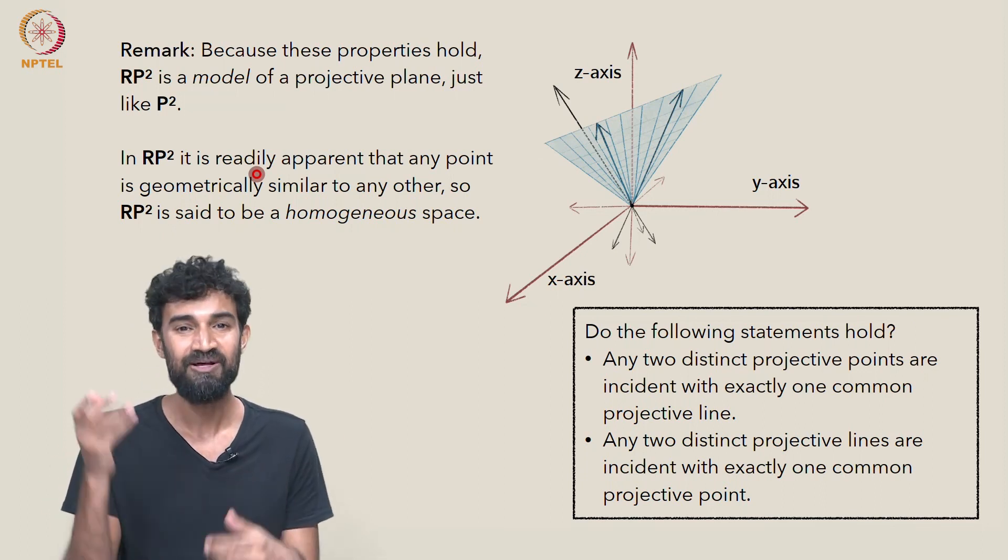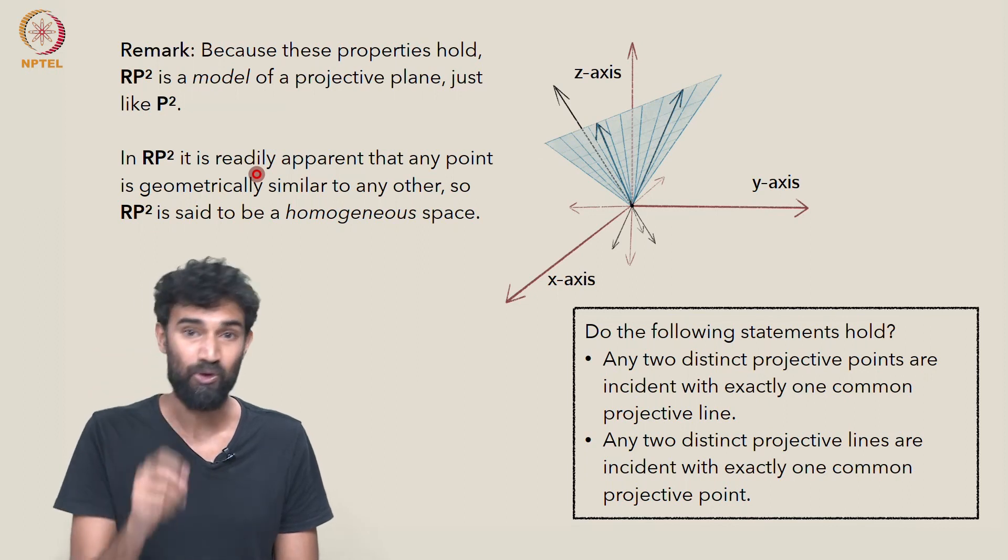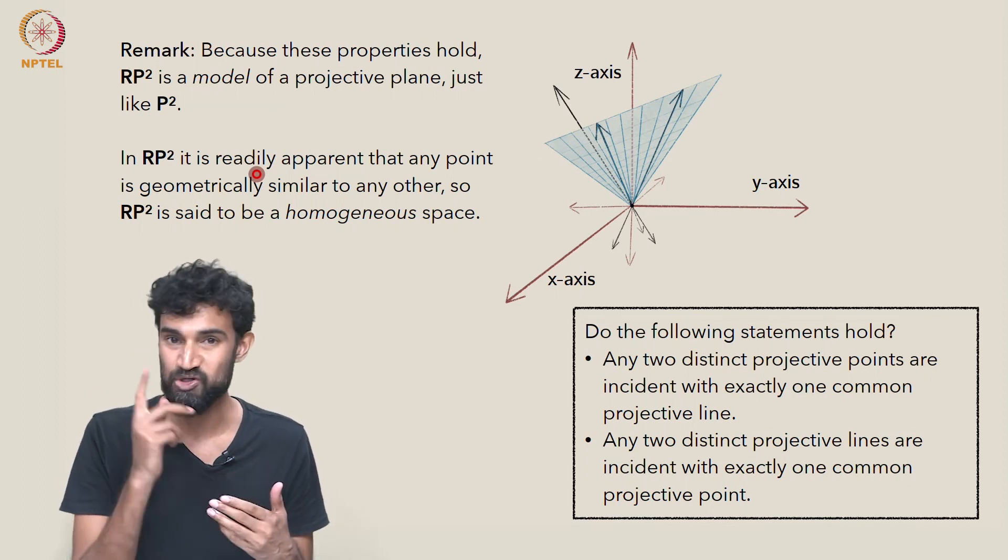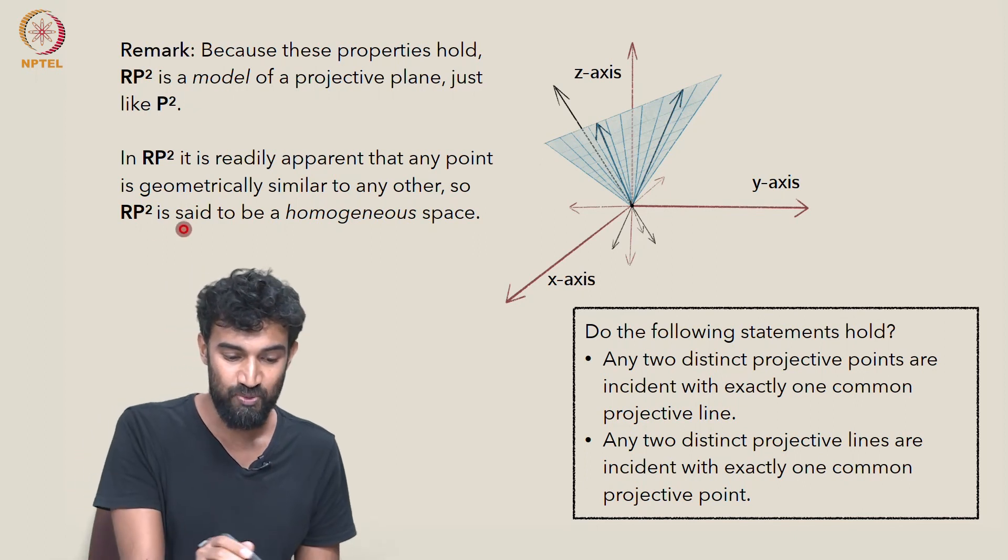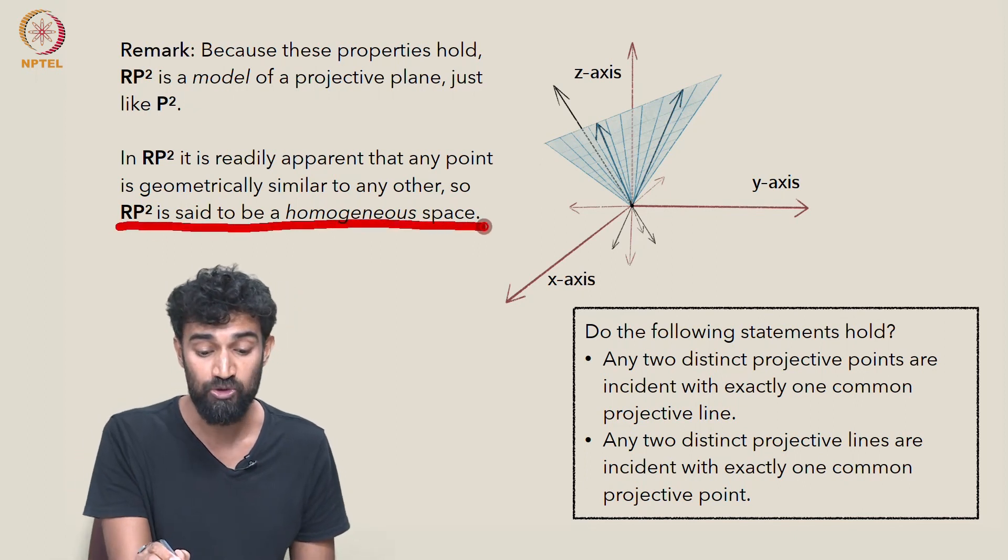They're all just lines through the origin in R³. There's nothing to distinguish one line through the origin from another. So in this way, RP² is said to be a homogeneous space.